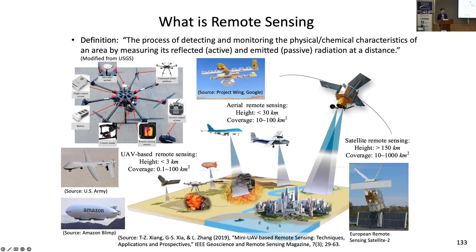So what is remote sensing? Remote sensing is the effort of putting sensors on a mobile platform to collect spatial information. That's not a technology we coined in civil engineering — it's something we borrowed from space technologies, agriculture, and earth science.